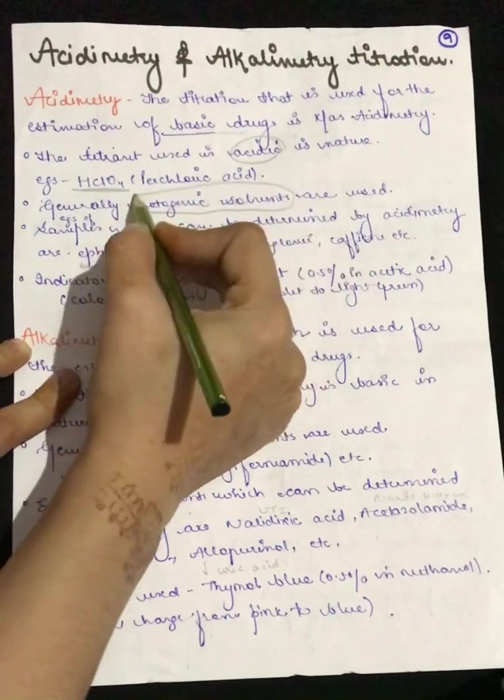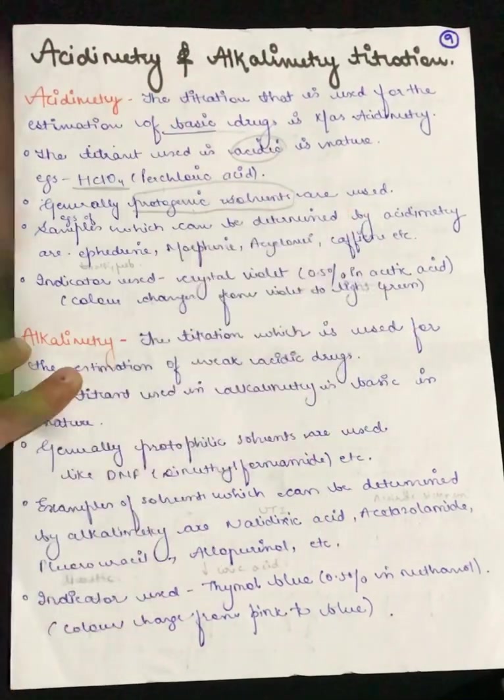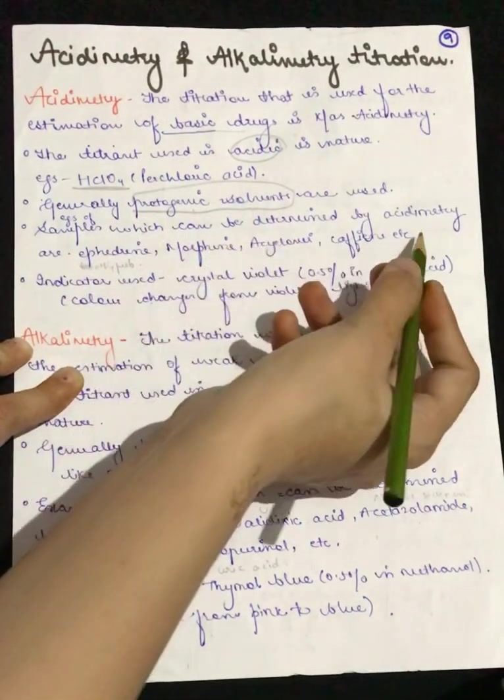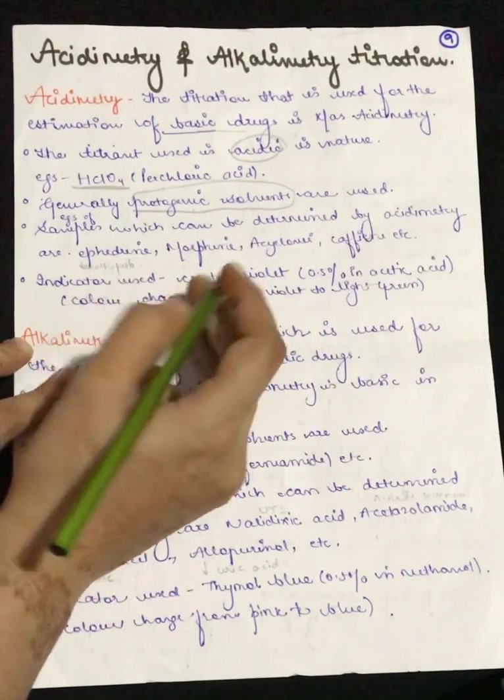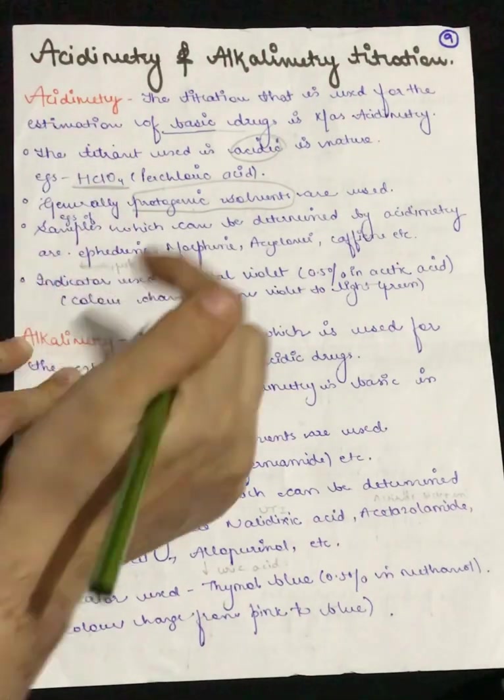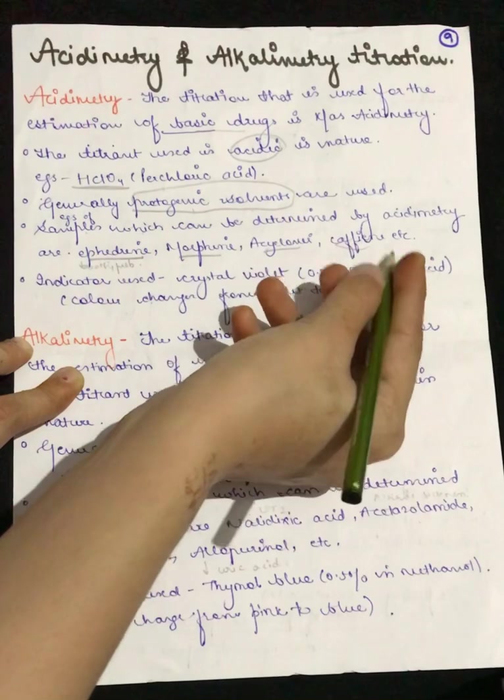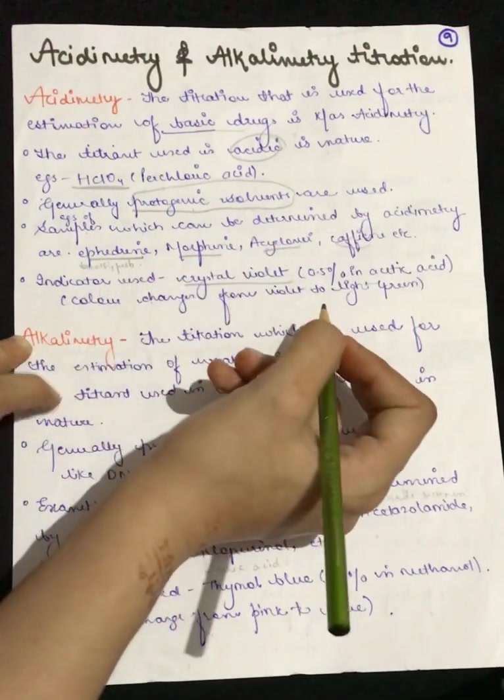Examples of samples which can be determined by acidimetry include some drugs that we can identify: ephedrine, morphine, acyclovir, caffeine, etc. And the indicator used is crystal violet.